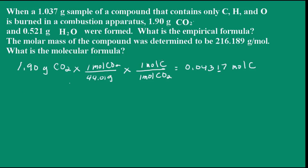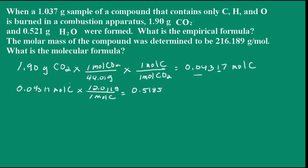Now let's determine the mass of carbon. We have 0.04317 moles of carbon, and we'll convert that to grams. One mole of carbon contains 12.011 grams. That works out to be 0.51854 grams of carbon.